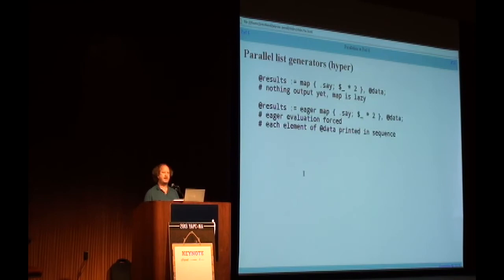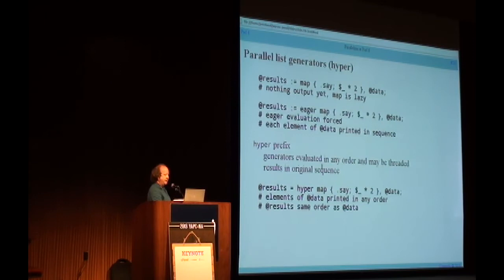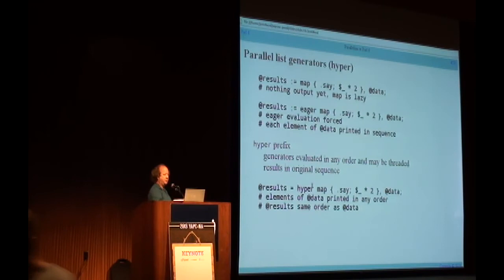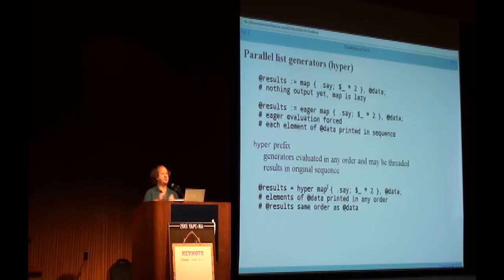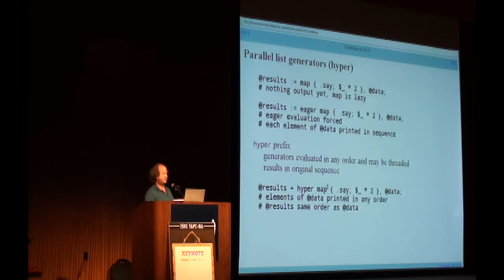There's another form called hyper, with the same connotation as the hyper operators but for lazy lists. If you put a hyper prefix instead of eager, you're telling the program: go ahead and eagerly evaluate the values, and I don't care what order you do it in, as long as you give them back to me in the same order they would have been had it been done sequentially. The map can recognize it's being hyper-evaluated, so it doesn't have to wait for the previous block to finish before starting the next — it can start several in parallel and process them concurrently, then re-sequence the results.